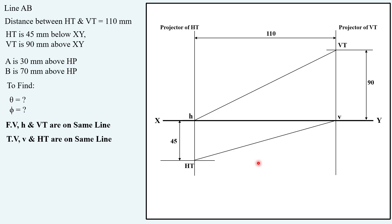Once you have joined this now you have to draw the locus of endpoint A that is 30 mm above HP. So taking 30 mm, this locus is going to cut this line joining H and VT. So this is the point which is our front view point of end A.